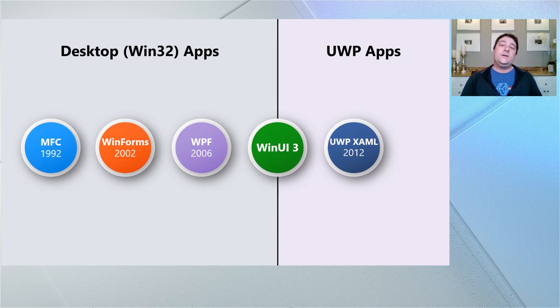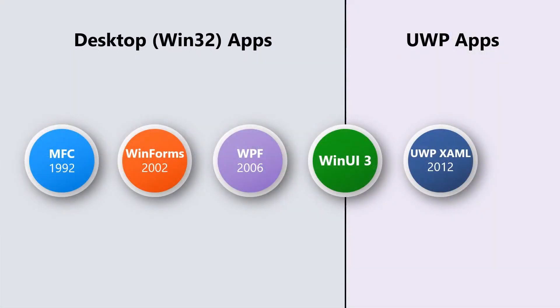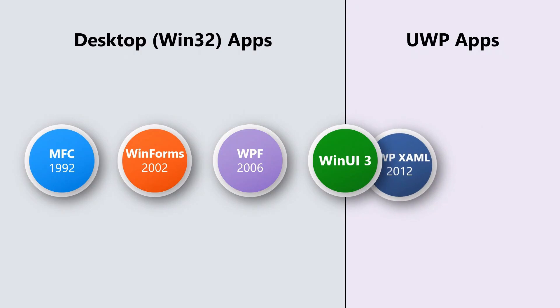For UWP developers, you shouldn't think of WinUI 3 as a new framework that makes UWP XAML obsolete. Think of it instead as the continuation of UWP XAML — it's just kind of rebranded. It's the next version of UWP XAML but now everybody will be able to use it. Some of you will be able to upgrade from UWP XAML to WinUI 3 just as easily as doing a find-and-replace operation to change namespaces.